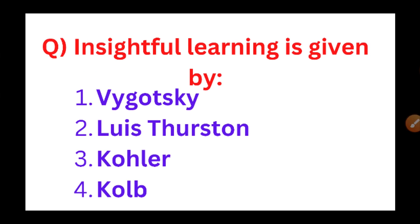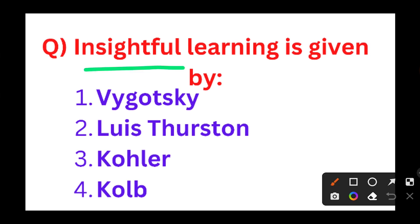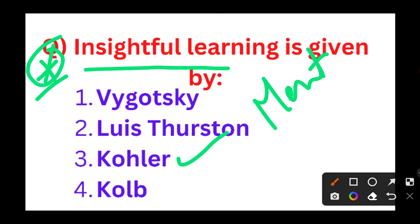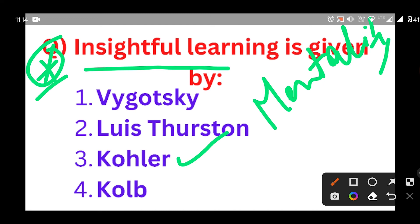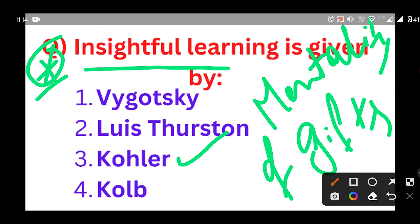The next question, which is very important: Insightful learning is given by. The options are Vygotsky, Lewis Thurston, Kohler, and Kolb. The insightful learning is given by Kohler. One of the famous books of Kohler is 'Mentality of Apes,' a very famous book written by Kohler.